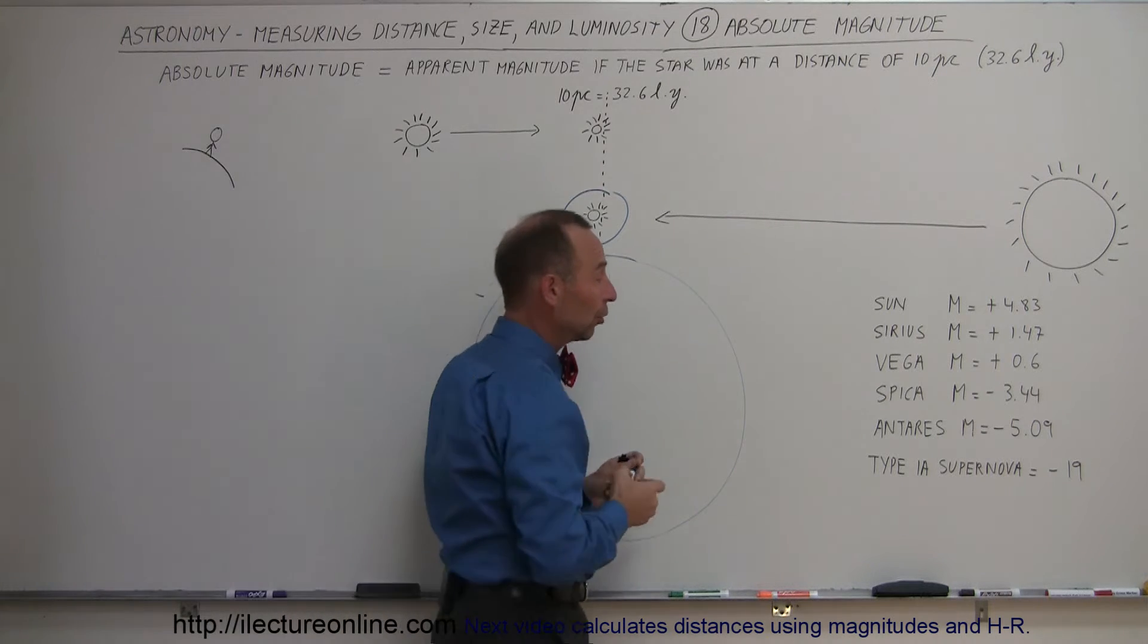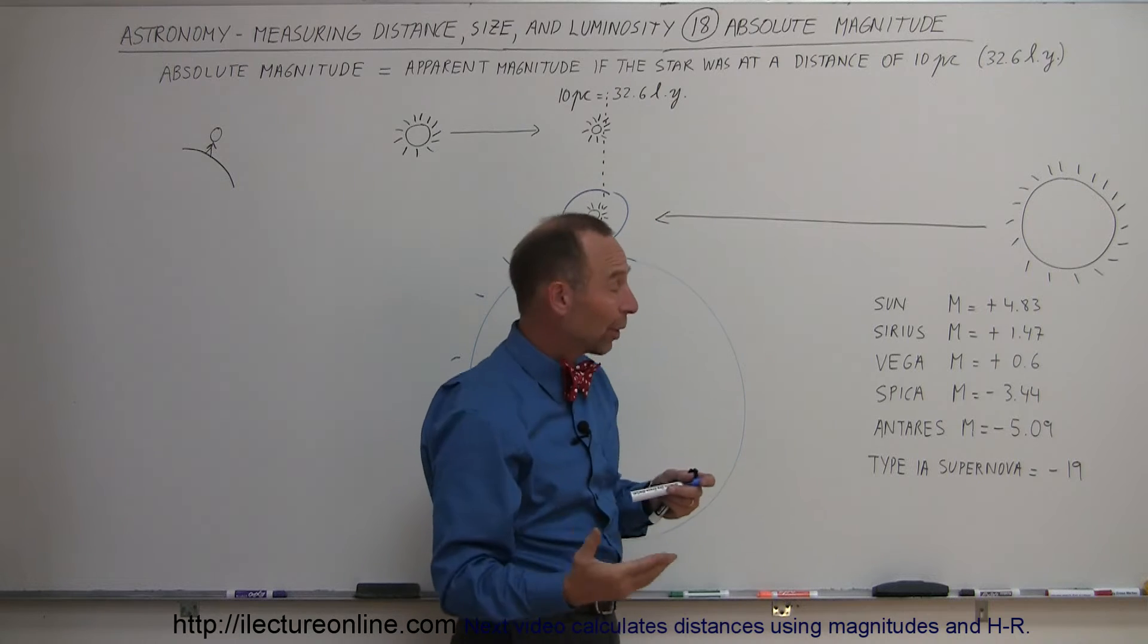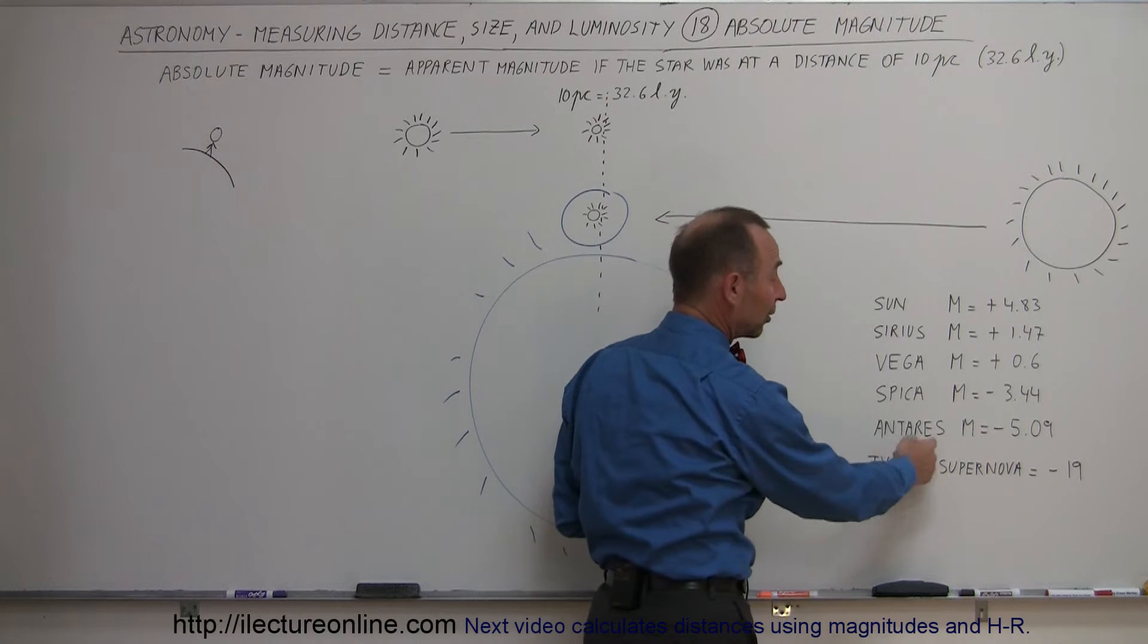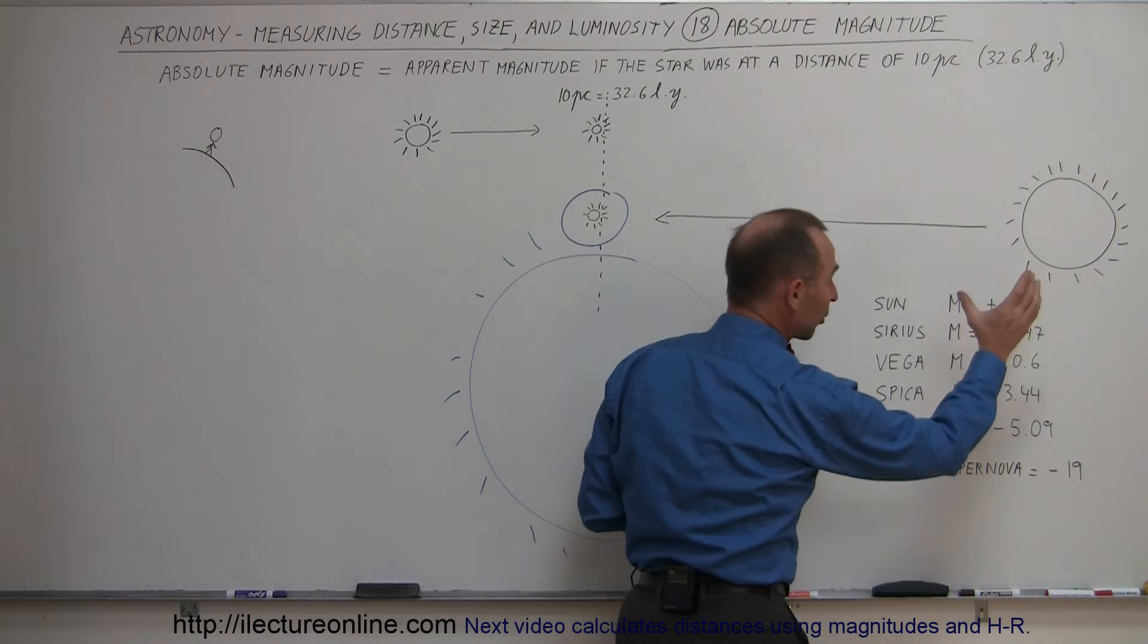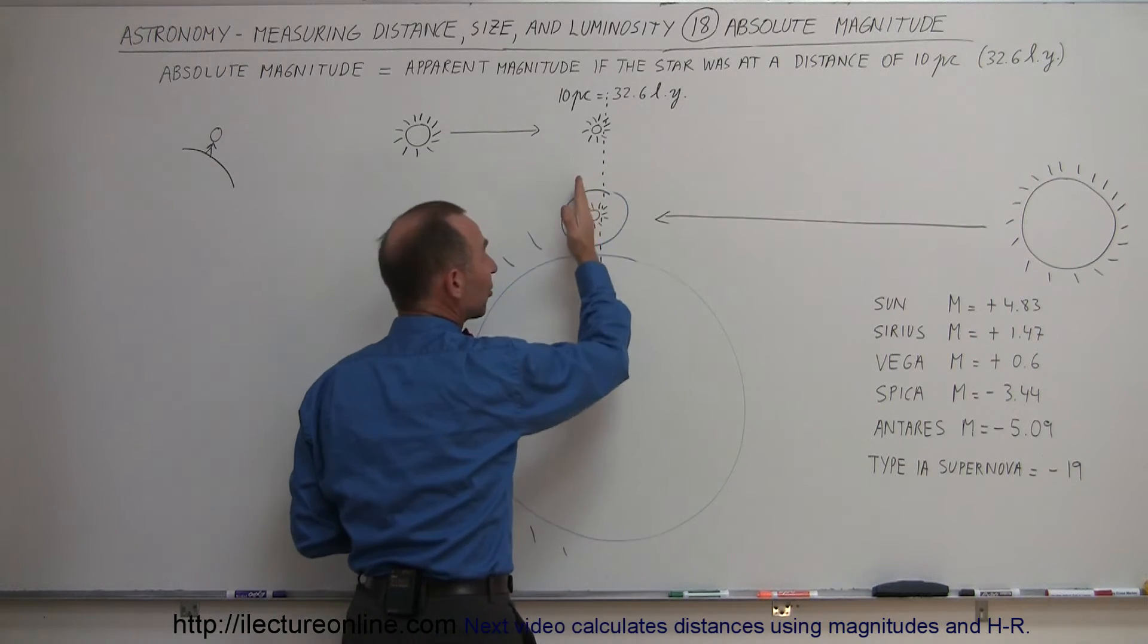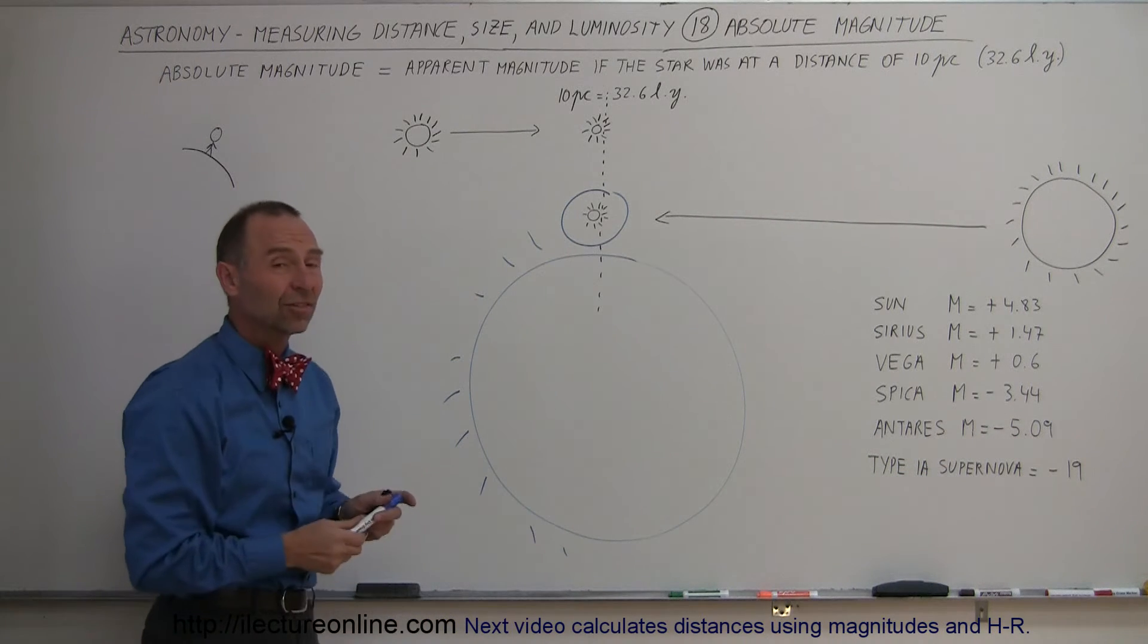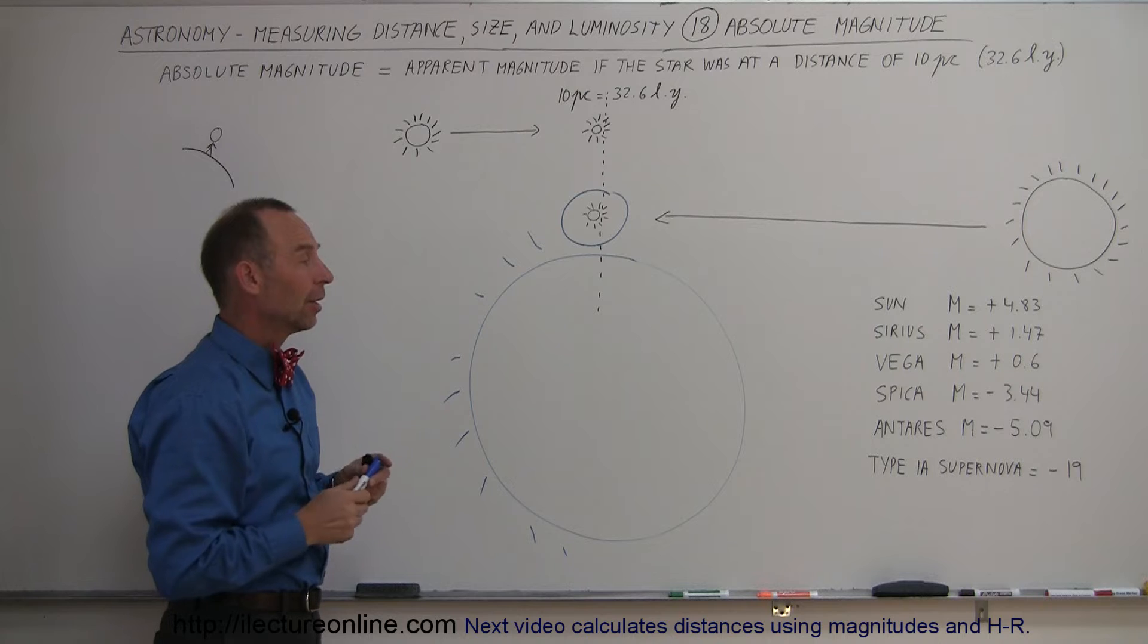And so there are some stars that are like that. For example, notice the star Antares. Antares is quite far away. It's still a fairly bright star in the sky. It's the brightest star in the constellation Scorpio. But notice, if we were to take the star and we move it closer to us, to a distance of 10 parsecs, it would have a magnitude of minus 5. It would look brighter than Venus in the sky. It would be absolutely enormous.